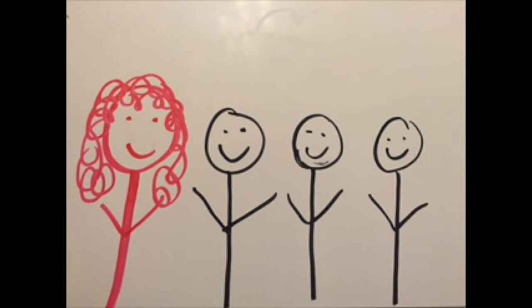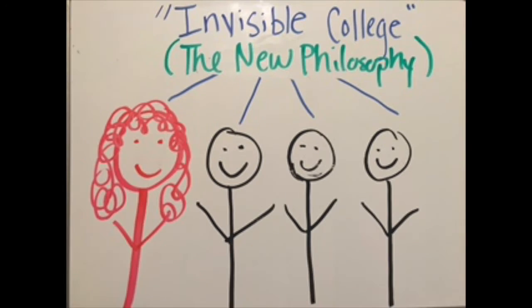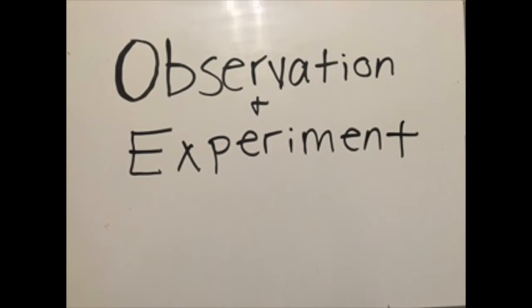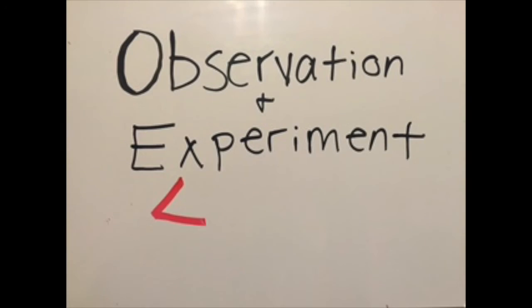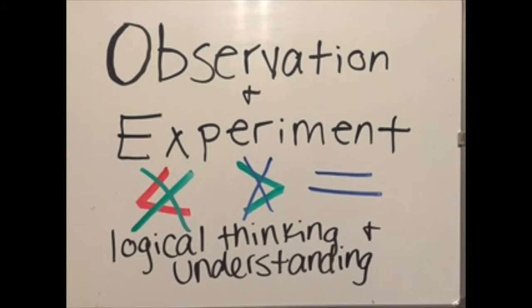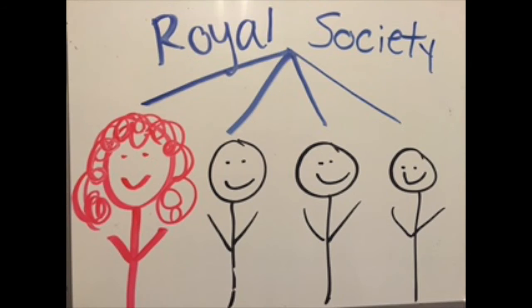He quickly found a group of colleagues who were also interested in the sciences, and they deemed themselves the Invisible College. This group studied the new philosophy, which valued observation and experiment just as much as logical thinking and formulating scientific understanding. This group later became known as the Royal Society.